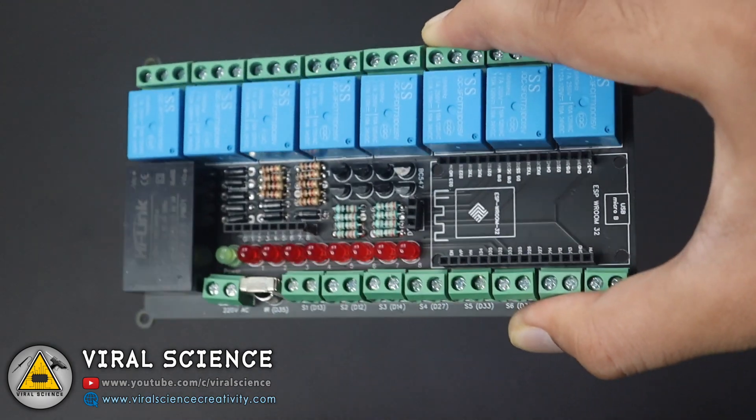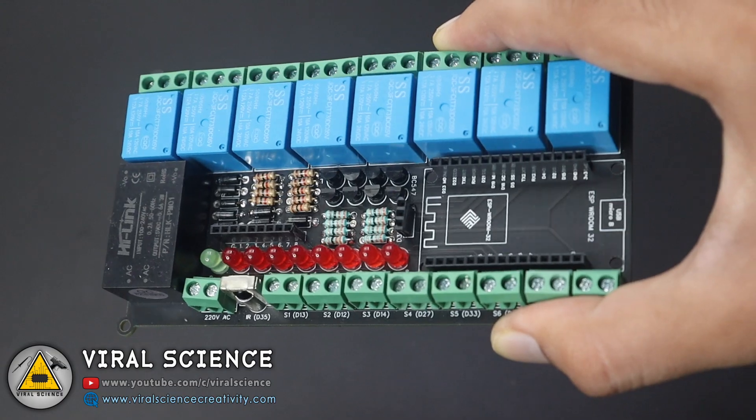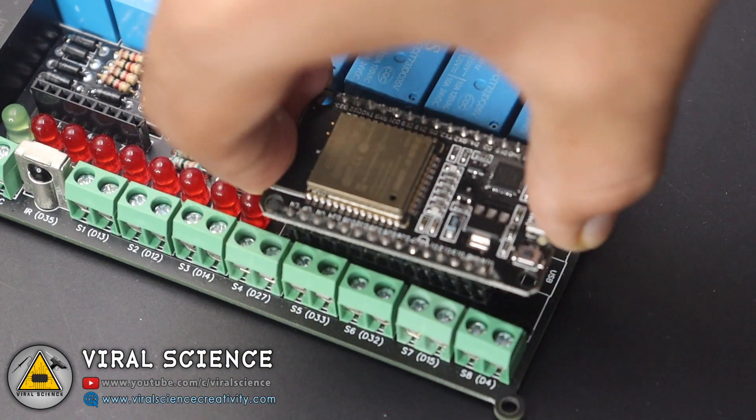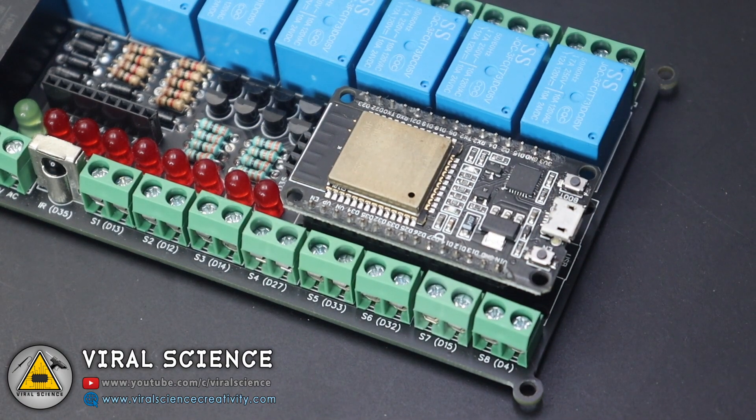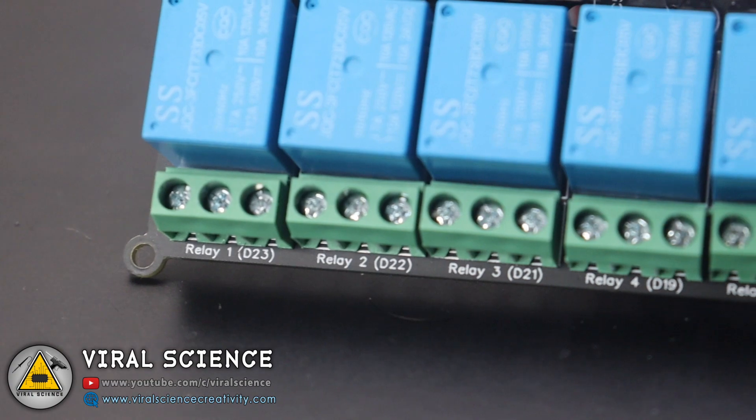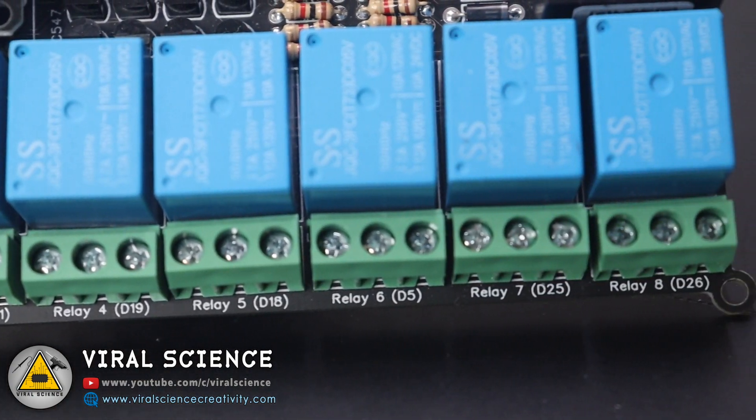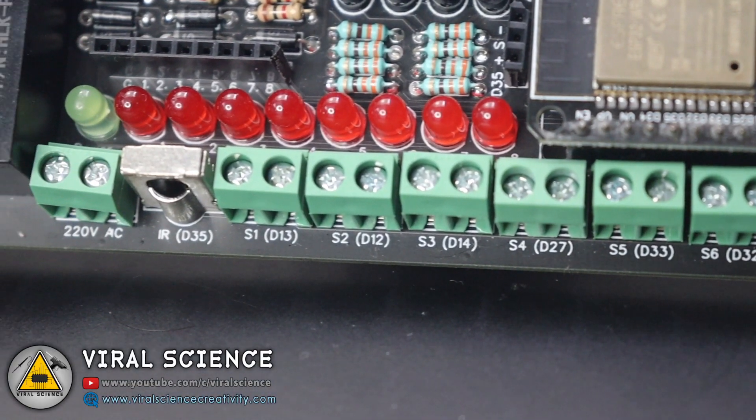So now I have soldered all the components on our PCB board and now it's time to connect the ESP32 board on this PCB. As you can see, this version of PCB has a very good labeling of all the pins which are connected to relays, switches, and other components.